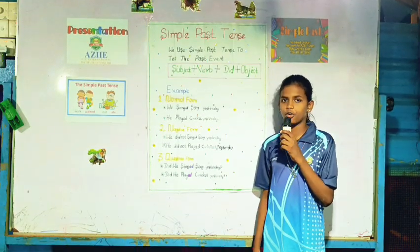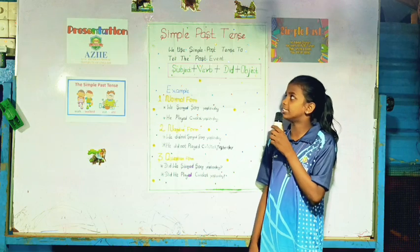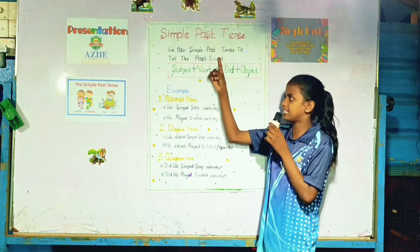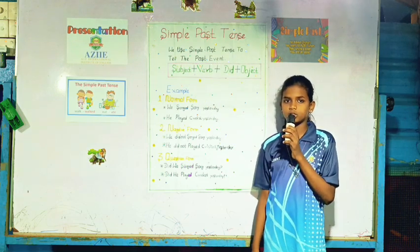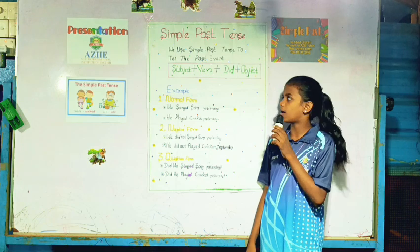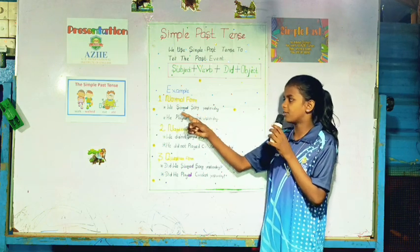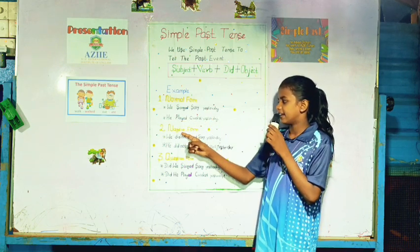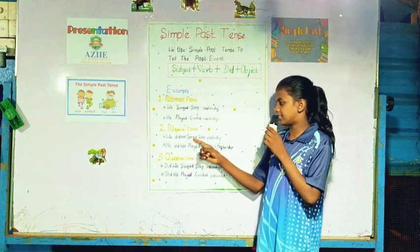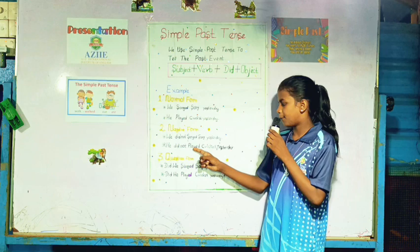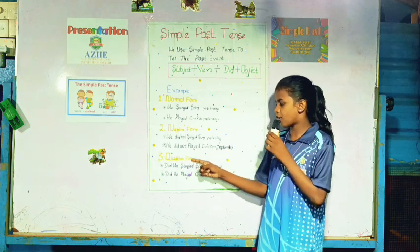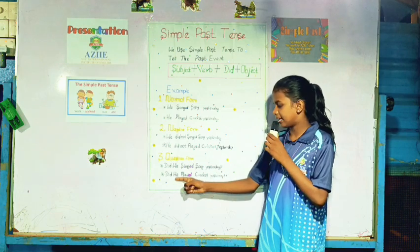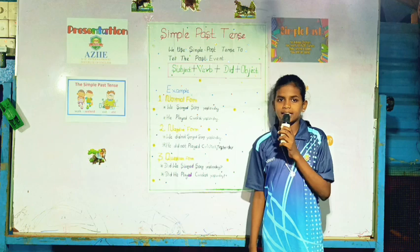Good evening, all of you. My name is Jali. I am going to tell about simple past tense. We use simple past tense to tell the past event. Structure: subject plus verb plus big past plus object. Normal form: We sang a song yesterday. He played cricket yesterday. Negative form: We did not sing a song yesterday. He did not play cricket yesterday. Question form: Did we sing a song yesterday? Did he play cricket yesterday?